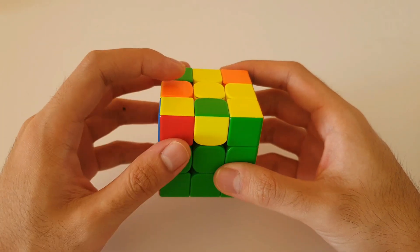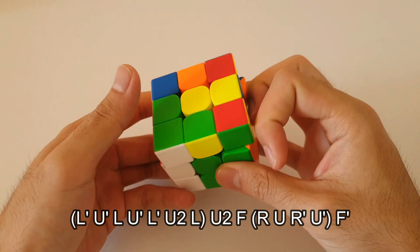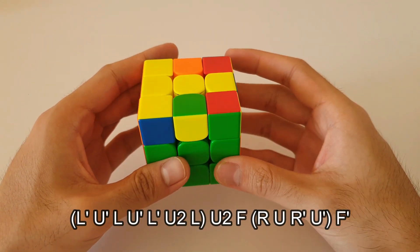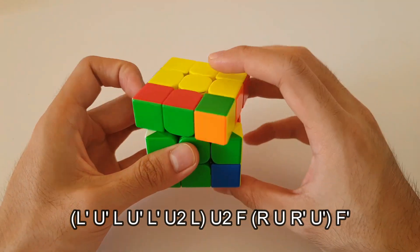So we want to start with the sune with our left hand. And then we have the T-OLL which you can do with your left hand or you can add a U2 and do the T-OLL with your right hand as usual.